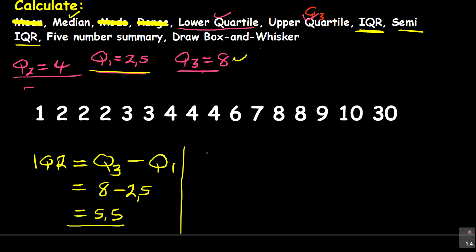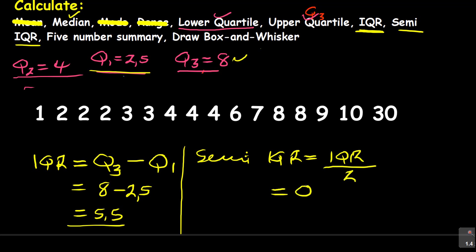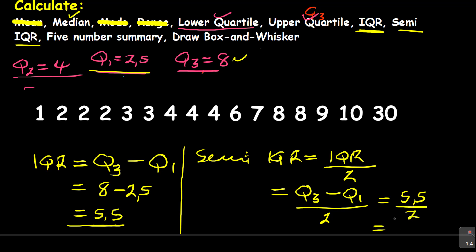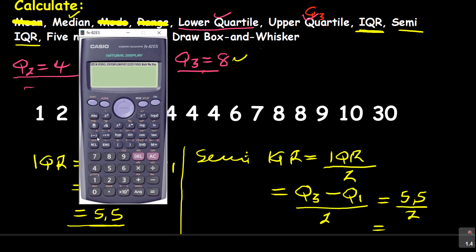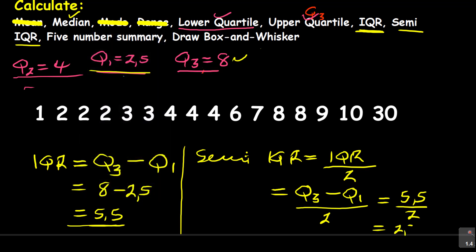What about the semi-interquartile range? The semi-interquartile range is not difficult. You take the interquartile range — which is IQR — and divide it by 2. So it's Q3 minus Q1 over 2. We know our interquartile range was 5.5, so 5.5 divided by 2 gives us 2.75. That is the semi-interquartile range.